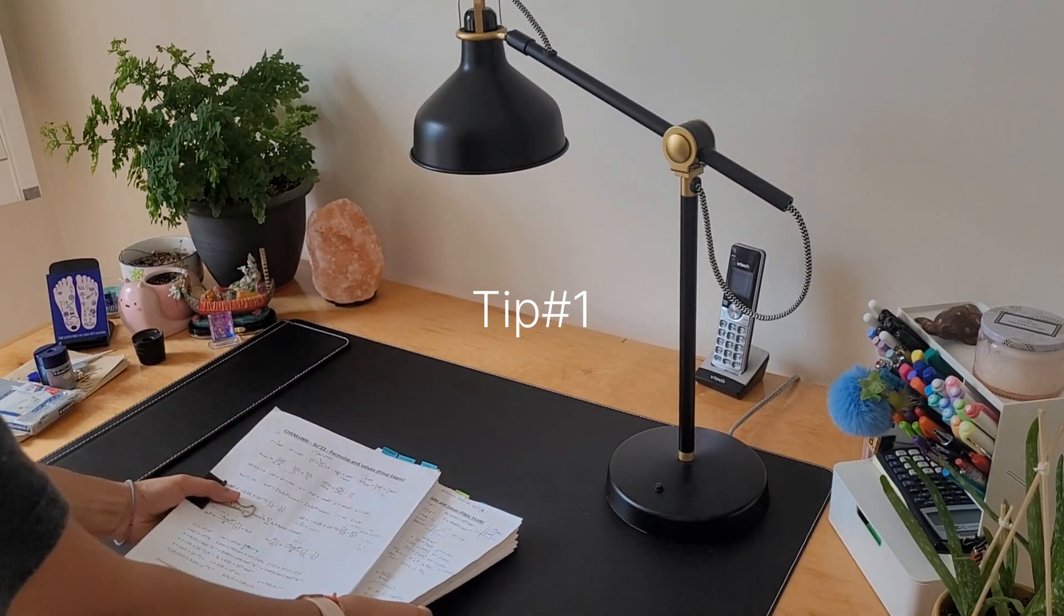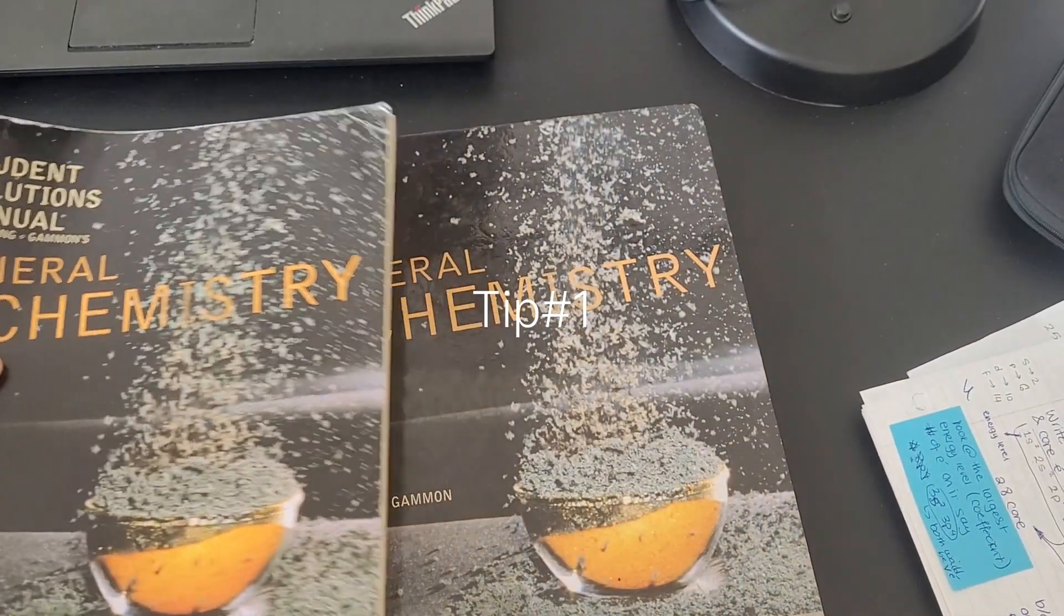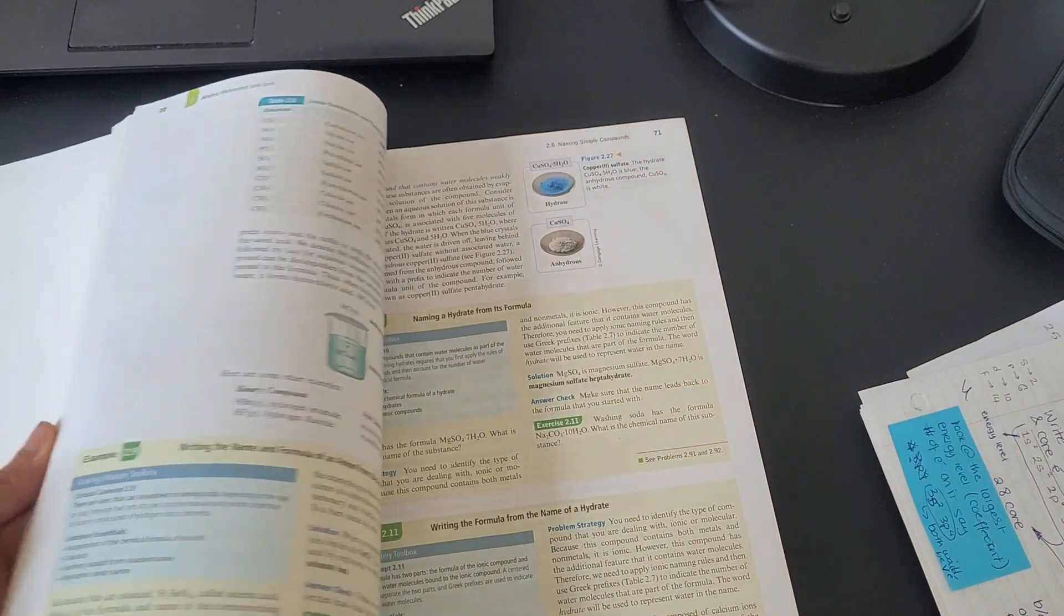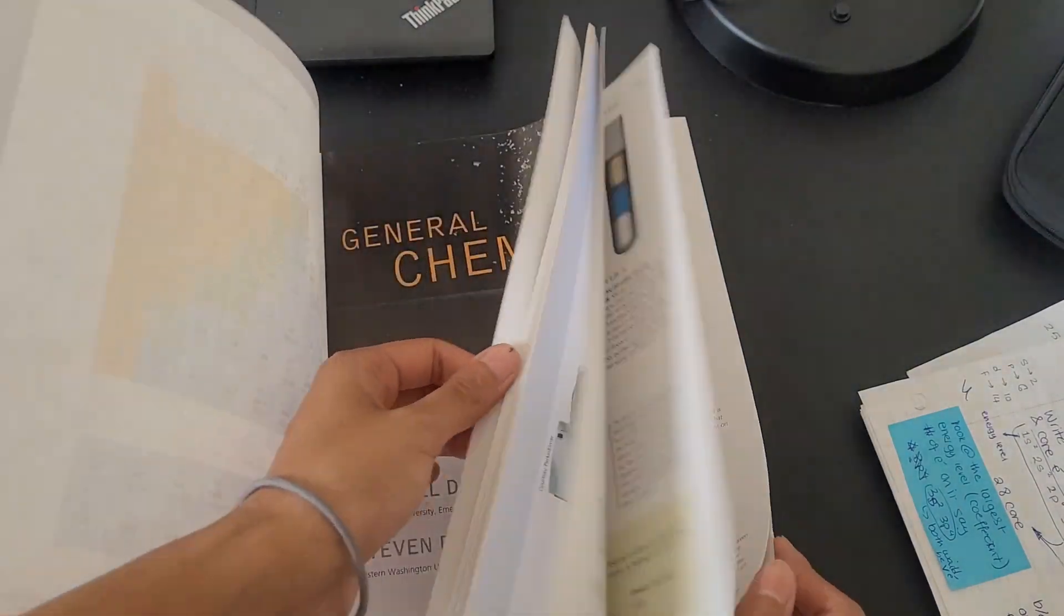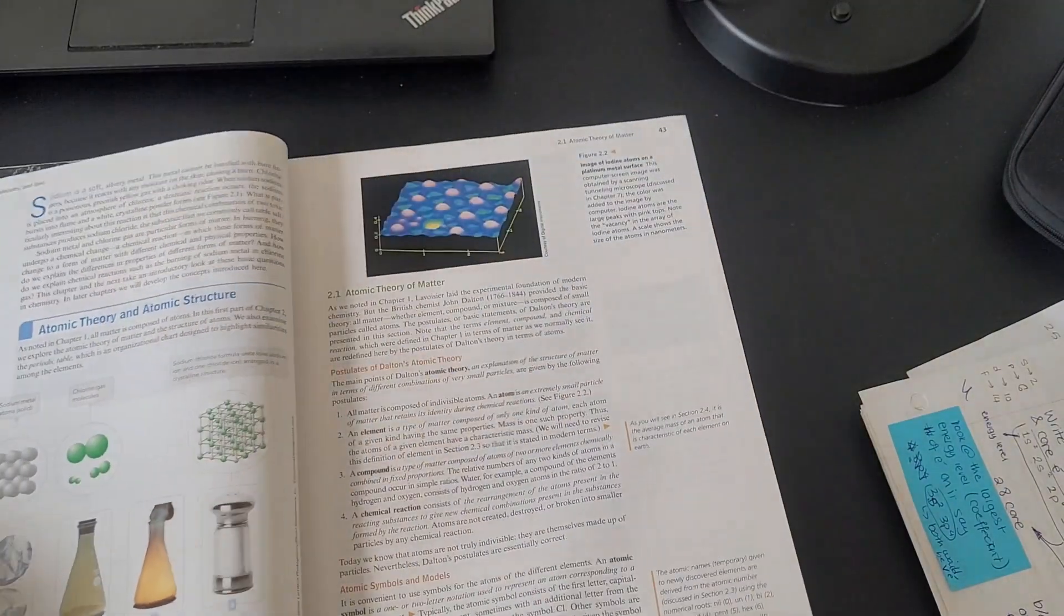Number one is do your own research on the topic being taught in class before it is officially introduced by your teacher. Especially if you're new to the specific terminology of chemistry, this really helps you understand what your professor will be talking about.